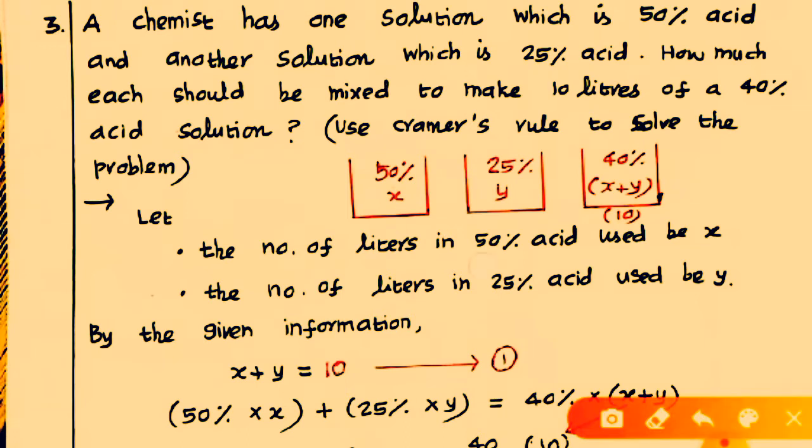Let the number of liters in 50% acid used be X, and the number of liters in 25% acid used be Y. So 50% acid content used is X liters, and 25% acid content used is Y liters.